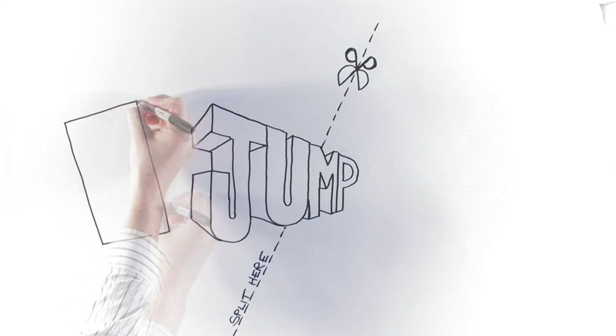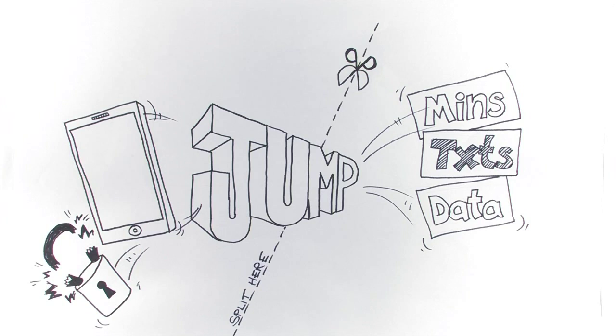What Jump does is split that two-in-one contract in half, so your phone and tariff are separate. This gives you the flexibility to switch—or jump, as we call it—to a new phone as soon as you're six months into your contract. It gives you more control.